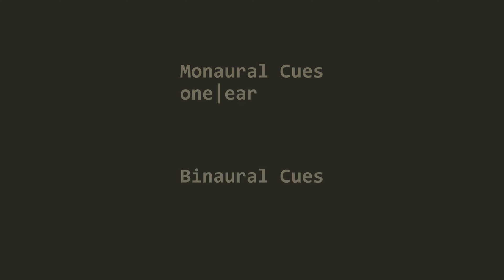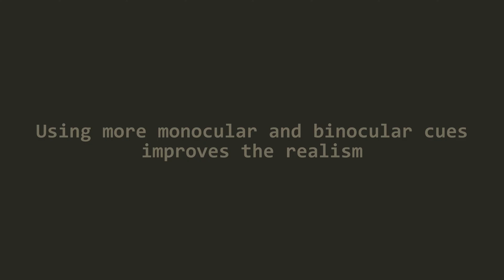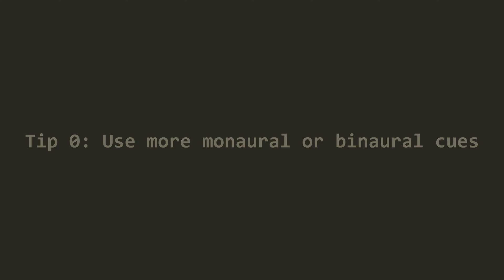Note that having both monocular and binocular cues provides the most convincing recreation of reality — the more cues you have, the more convincing the visuals can be. In a very similar way, we have several auditory cues to determine where sounds are coming from and how far away they are. We can lump these into two categories: monaural cues, techniques not reliant on having two ears, and binaural cues, techniques that are reliant on having two ears. Binaural audio is audio that uses binaural cues in order to utilize a listener's ability to localize sound.